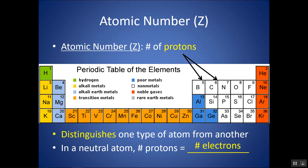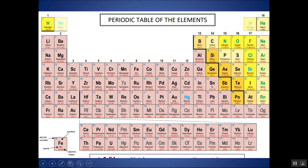In a neutral atom, protons are equal to the number of electrons. Each periodic table might have the atomic number in a different place. The one we are working with has a key in the bottom left-hand corner that tells me the atomic number is the top left-hand number on this periodic table. Depending on your periodic table, it might be in a different location.